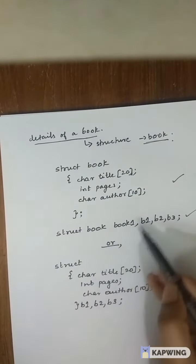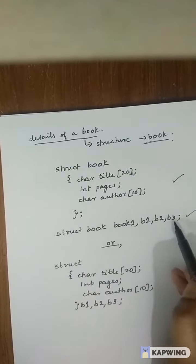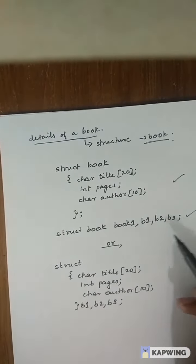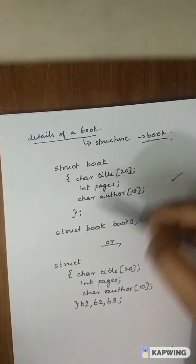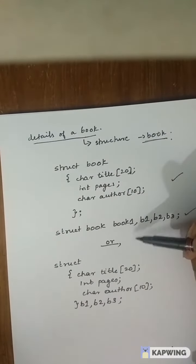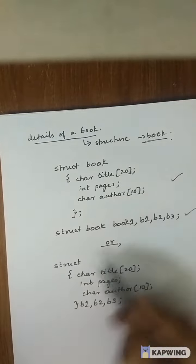Which means book 1, book B1, B2, B3 etc. Closing it with a semicolon. So either I can declare or I can write another way of declaring the structure.